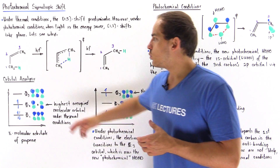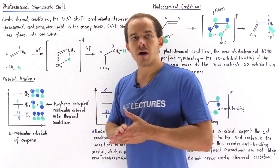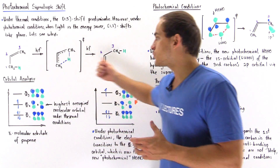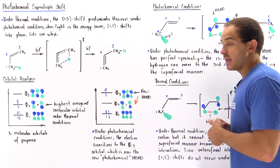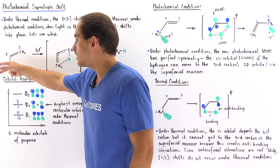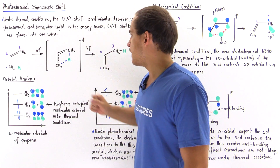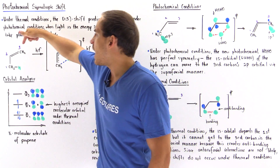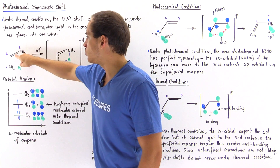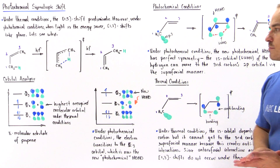So let's suppose we have a propene molecule as shown. If the propene molecule is exposed to some light source, our sigmatropic reaction will take place in which the H atom found on the first carbon will basically migrate in an intramolecular fashion in a single step onto the third carbon, and this bond will shift onto this position as shown in the product molecule.